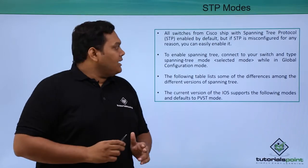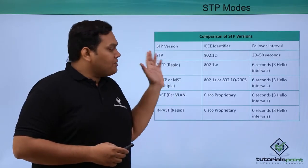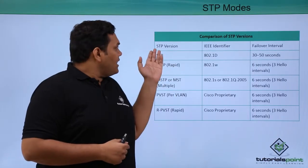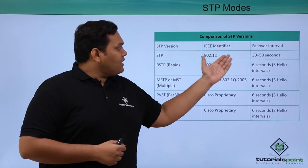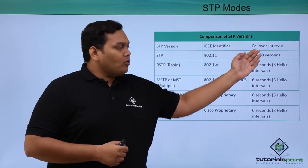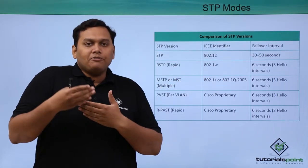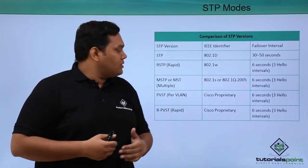Looking at the comparison list of STP versions, you can see three columns: STP version, IEEE identifier, and failover interval. This comparison gives you the differences between the STP modes.